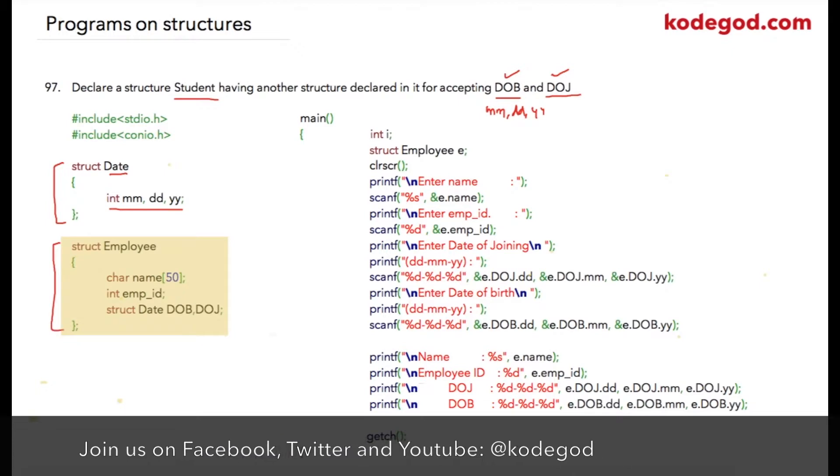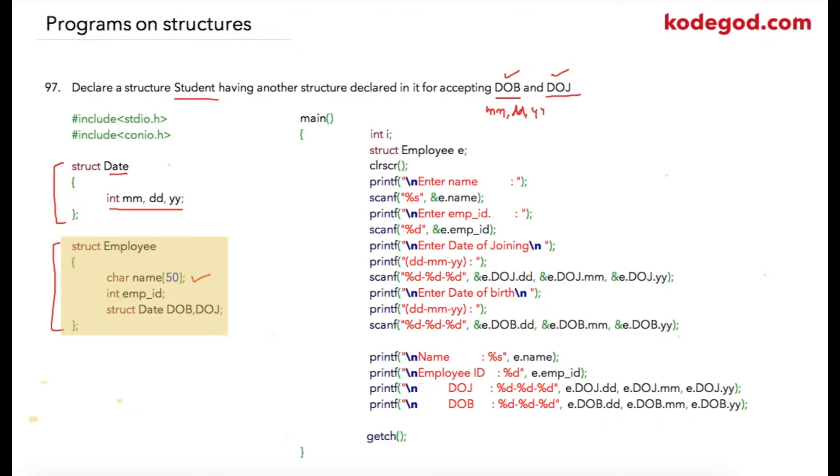Then I am using one more structure as Employee. Inside of that I have a character array, that is a string for storing name, then integer variable employee_id, and after that I have a structure declared inside of this structure that is of type Date, and my variable names are DOB and DOJ. Inside of Employee we have name as character array, then employee_id as integer, and inside of that we have structure variables DOB and DOJ of type Date, which internally have three data members of type integer: mm, dd, yy.